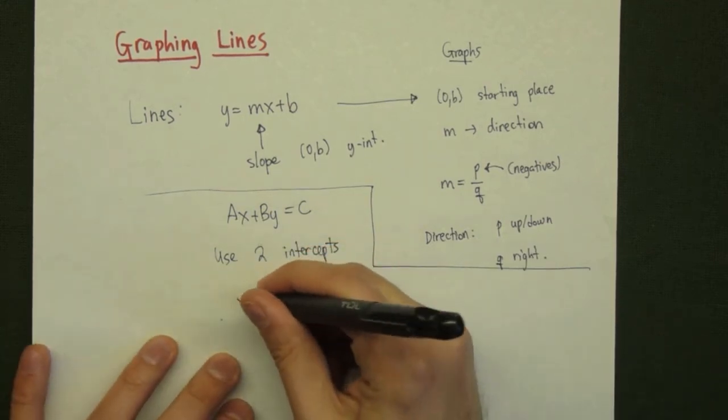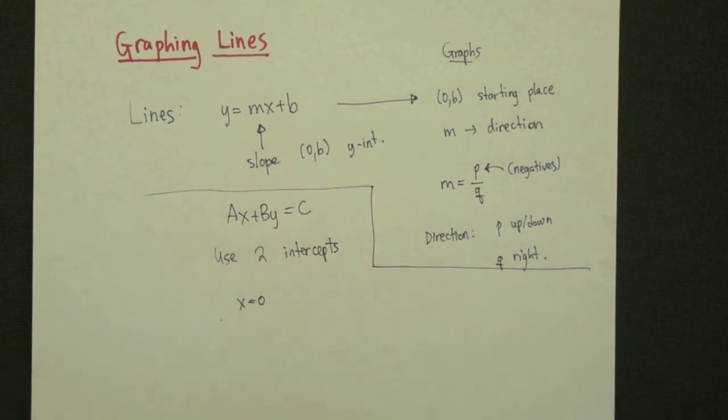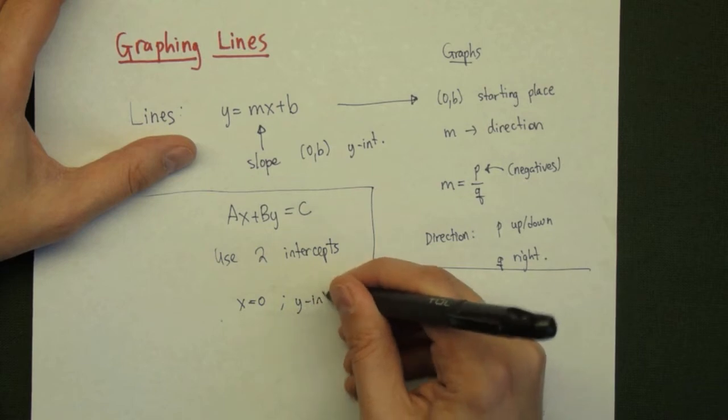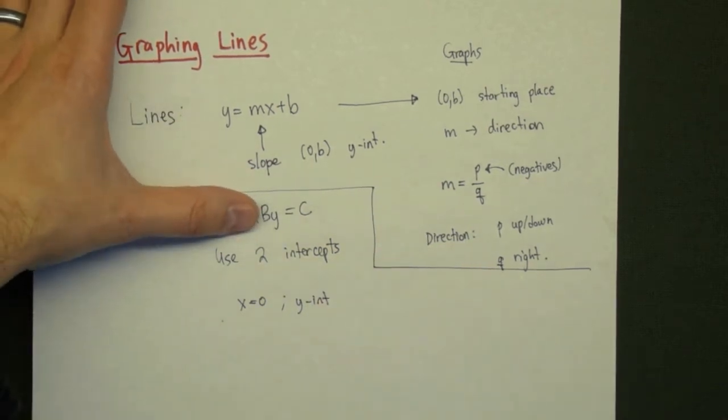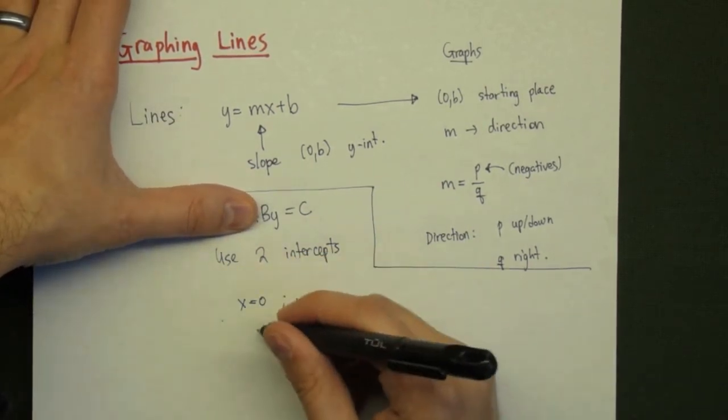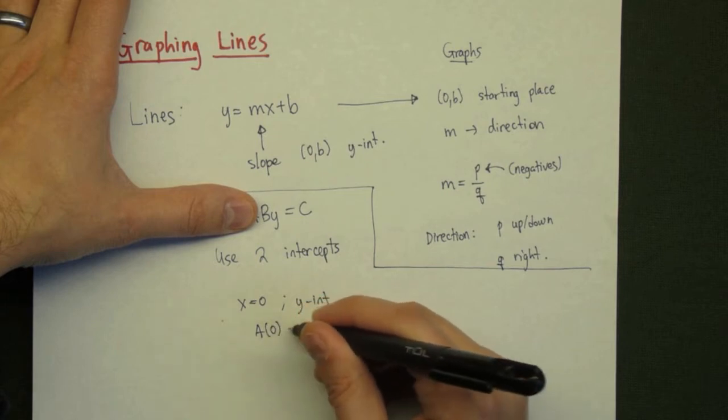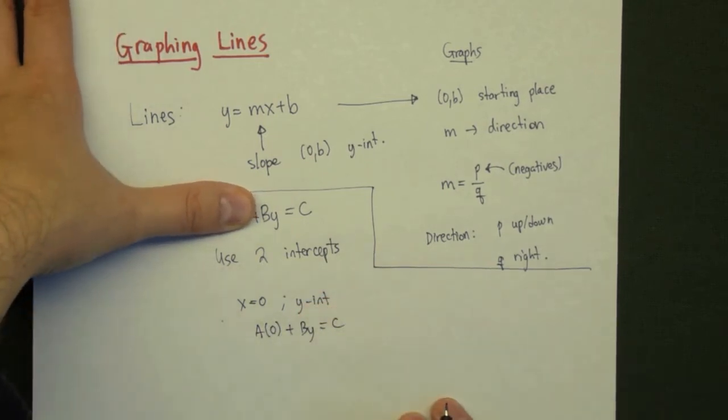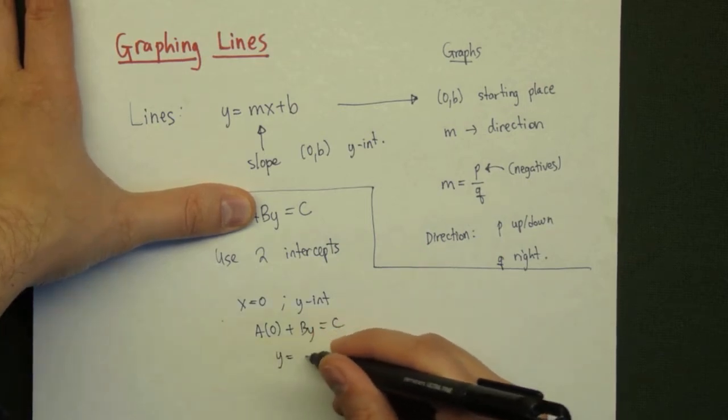If you remember, to find the y-intercept, we take x equal to 0, because x is 0 on the y-axis, and we solve the resulting equation. When x is equal to 0, the equation we have is a times 0 plus b times y is equal to c. That's eliminating the first term in the equation. So, solving what's left, we get y is equal to c over b.